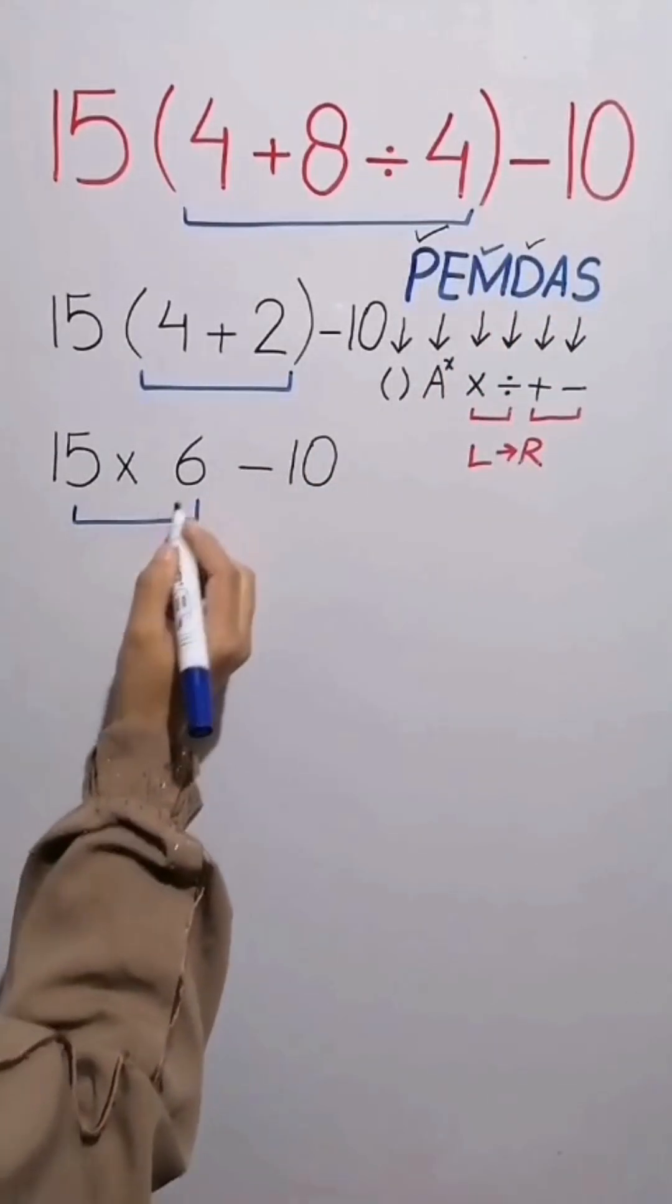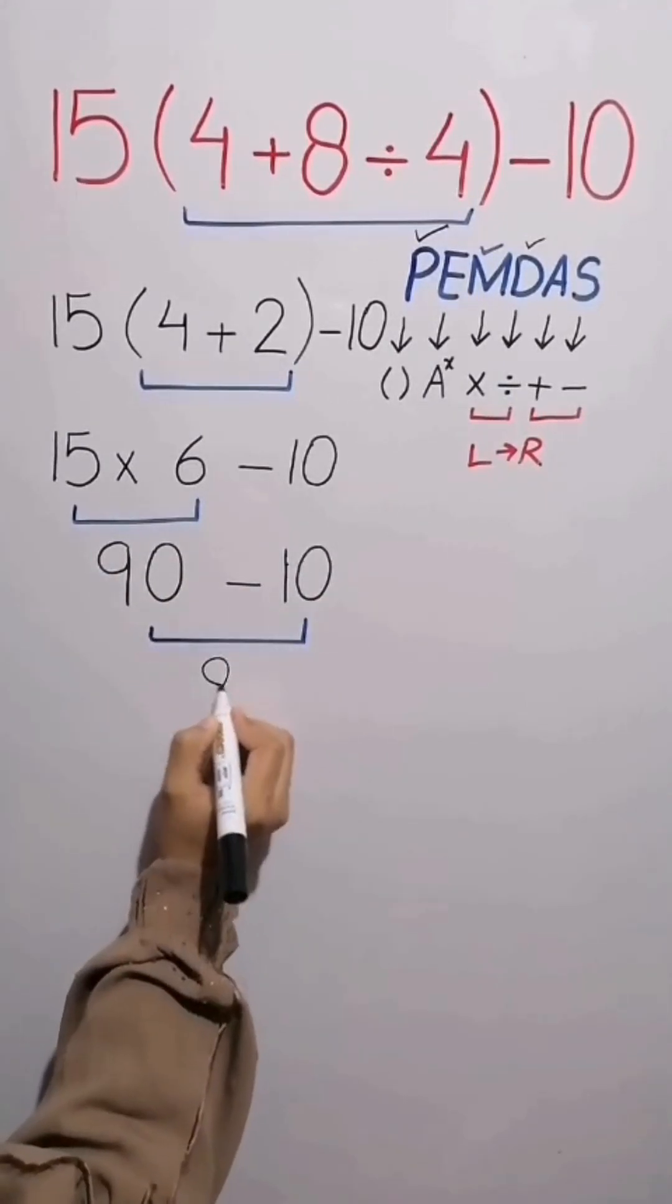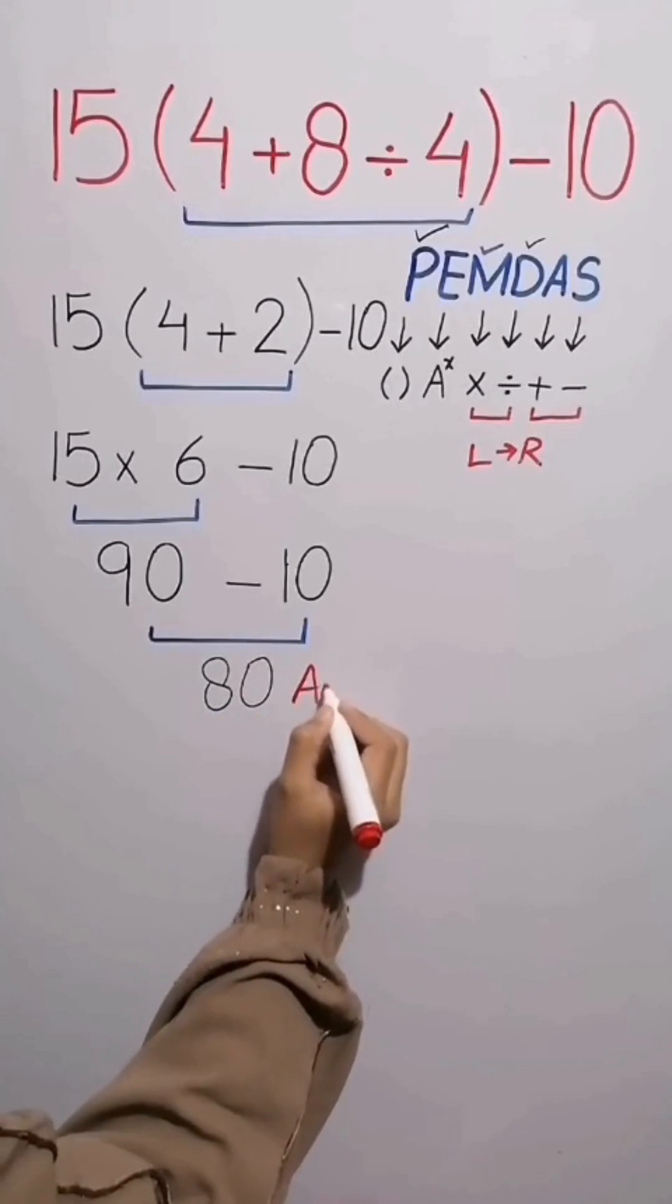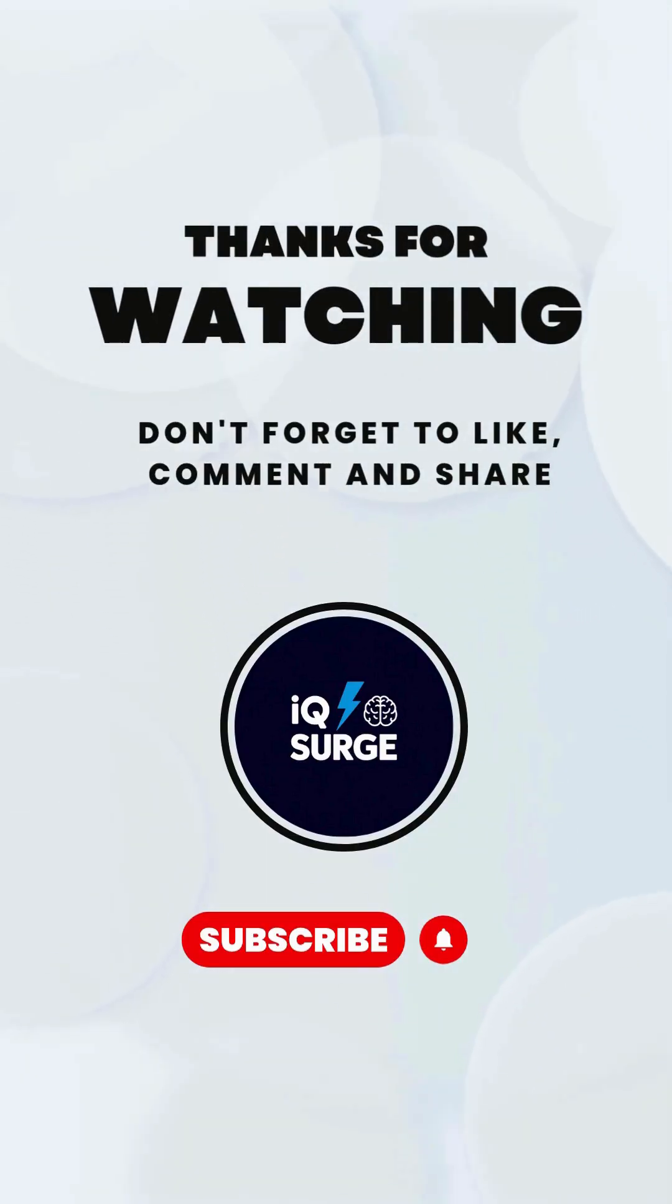15 times 6 gives us 90, and 90 minus 10 equals 80. The final answer is 80. To see more math videos, subscribe to the channel.